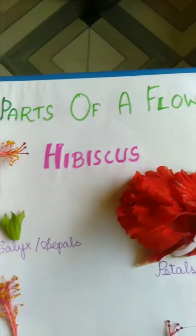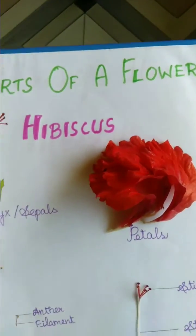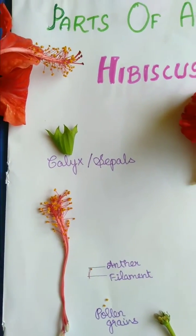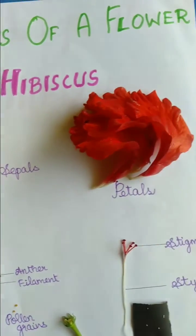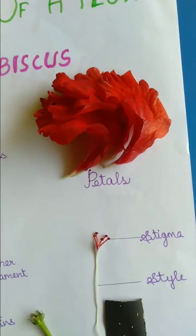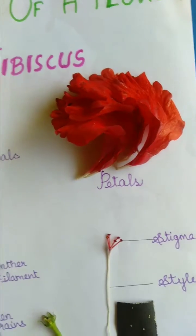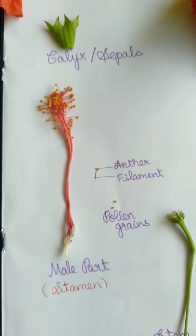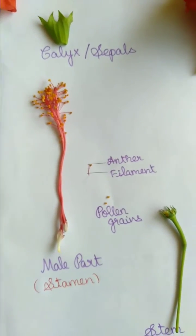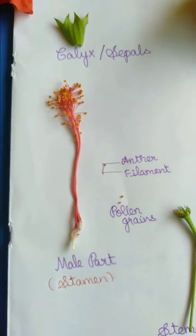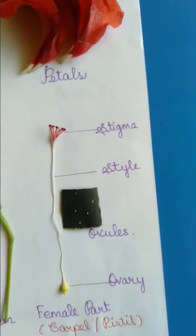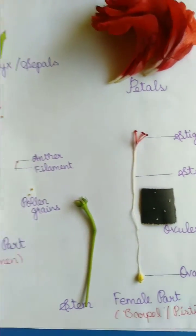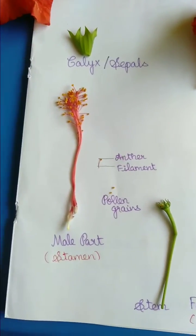Now see the parts of the flower. First one: calyx or sepals. Then the second one is petals. Then the male part, stamen. Then the female part, carpel or pistil.